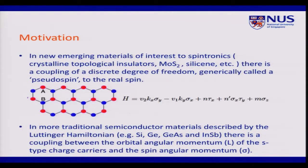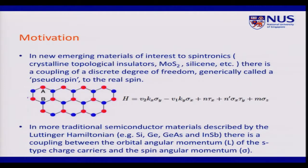Moving on to the motivation of my talk: in spintronics, there are a few new emerging materials — such as silicon, molybdenum disulfide, and crystalline topological insulators — where you have a degree of freedom with a discrete number of states that is coupled to your spin degree of freedom. Collectively, we call these discrete states coupled to spin a pseudo-spin. These materials have a hexagonal honeycomb crystalline structure with two inequivalent lattices, labeled A and B, giving rise to a pseudo-spin that mathematically looks like a spin and can be represented as a Pauli matrix, denoted tau. This pseudo-spin is coupled to the real spin, denoted sigma.